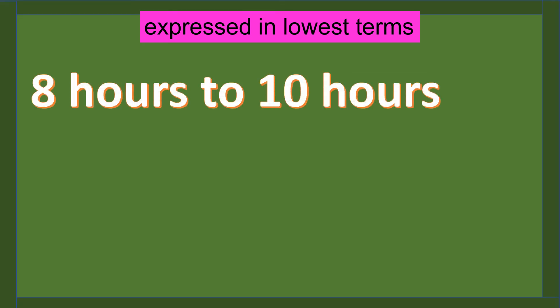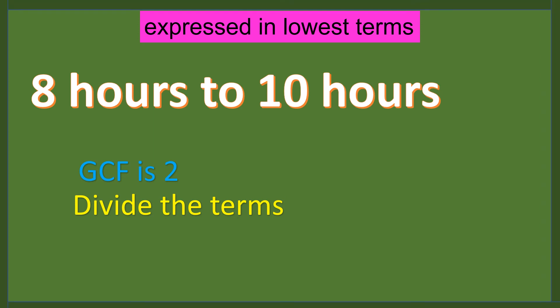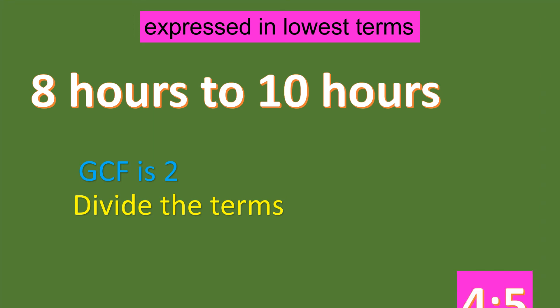Next: 8 rupees to 10 rupees, which is 8 is to 10. The GCF of 8 and 10 is 2. Divide the terms: 8 divided by 2 equals 4, and 10 divided by 2 equals 5. So, the answer is 4 is to 5.